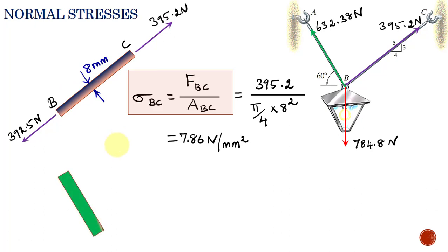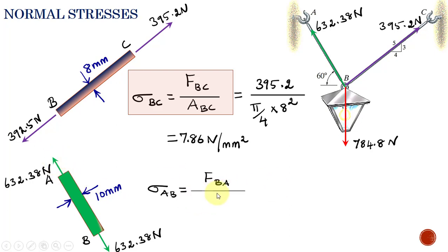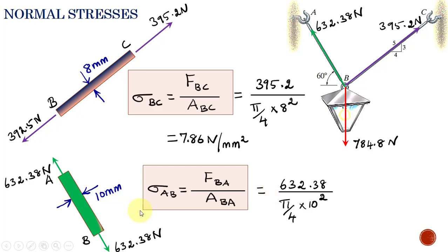Now let us calculate the normal stress along rod AB. It is subjected to a tensile force of 632.38 Newton. By Newton's third law, there is an equal and opposite force of 632.38 Newton on the other side. The diameter of this rod is 10 mm. The normal stress along AB equals 632.38 divided by (π/4 × 10²), and solving this gives a normal stress of 8.05 N/mm².